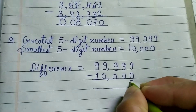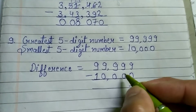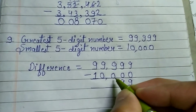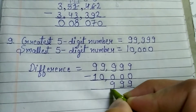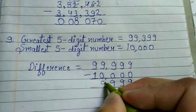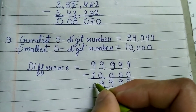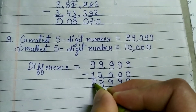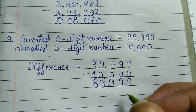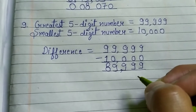The difference: 9 minus 0 is 9. 9 minus 0 is 9. 9 minus 0 is 9. 9 minus 1 is 8. Your answer is 89,999. It is called the difference.